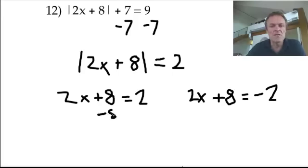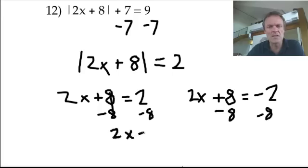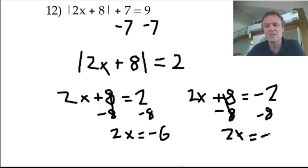We're going to take away 8 from both of them. I'll just do it all at once. So take away 8 from here and take away 8 from here. So we have 2x equals negative 6. I hope you can do the basic math. And over here we've got 2x equals negative 10.